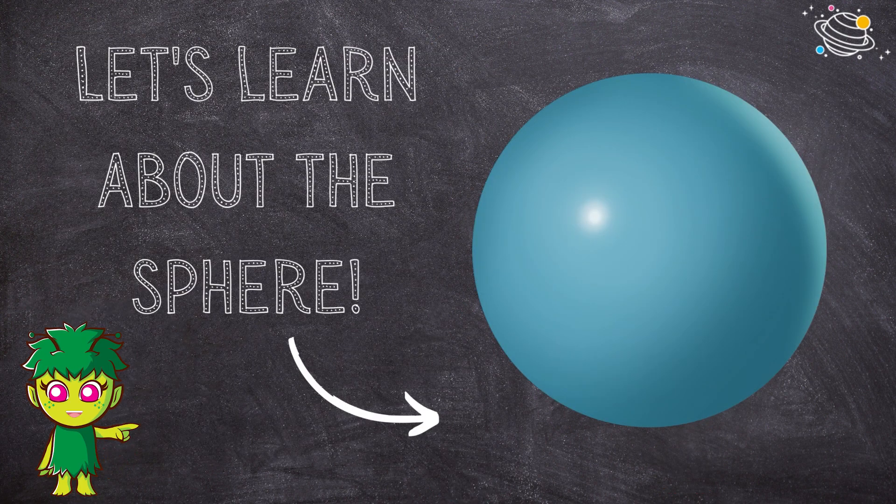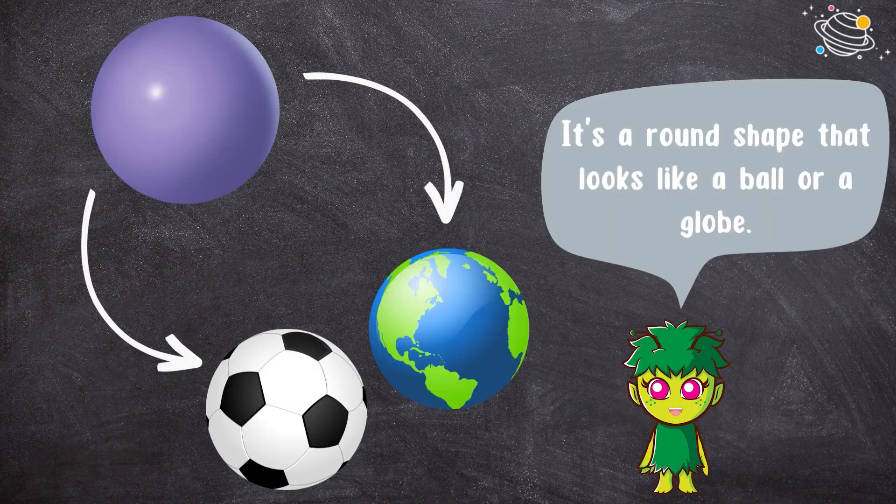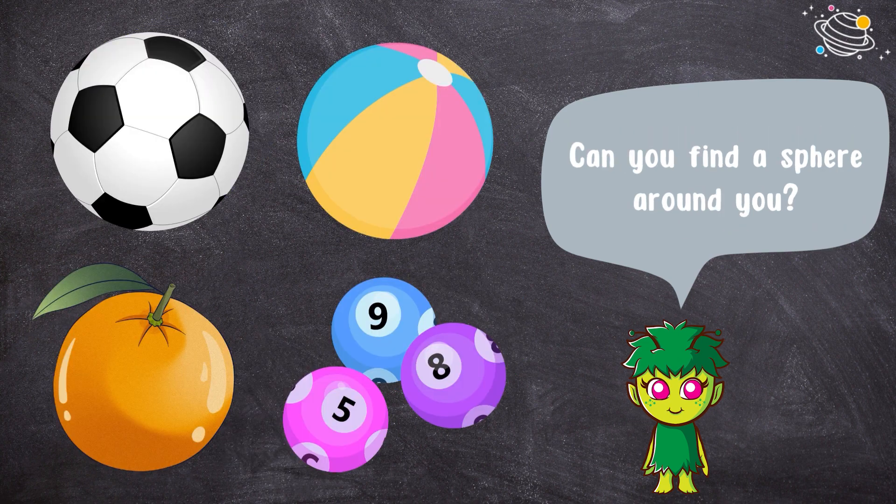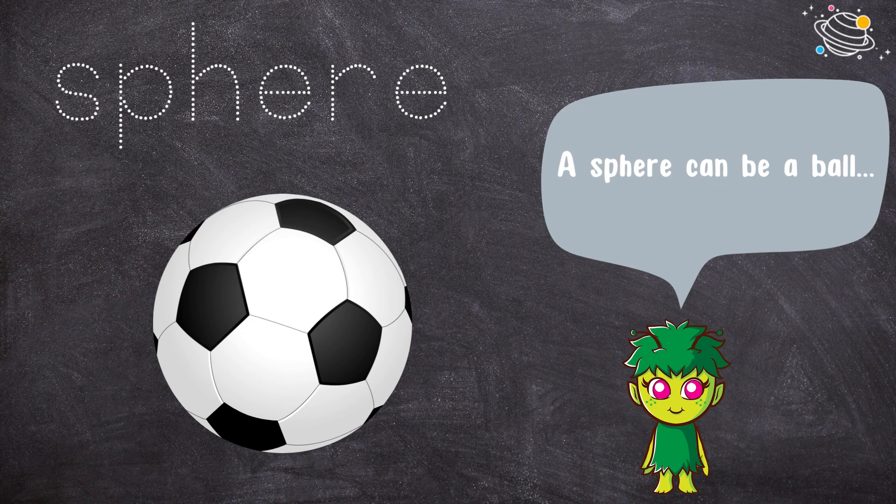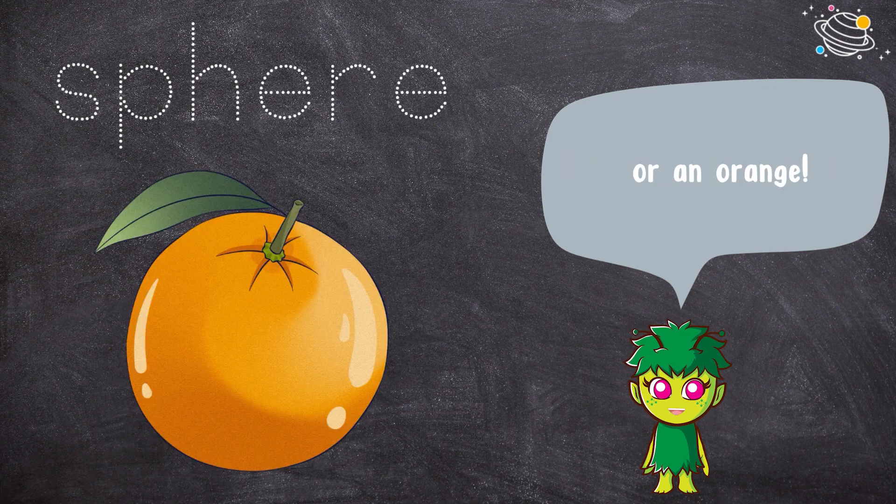Let's learn about the sphere. It's a round shape that looks like a ball or a globe. Can you find a sphere around you? A sphere can be a ball or an orange.